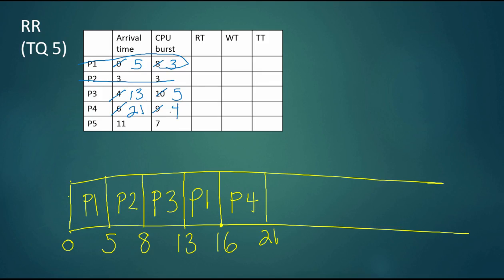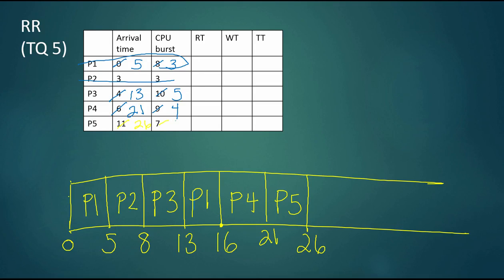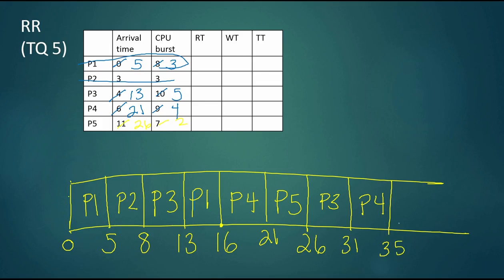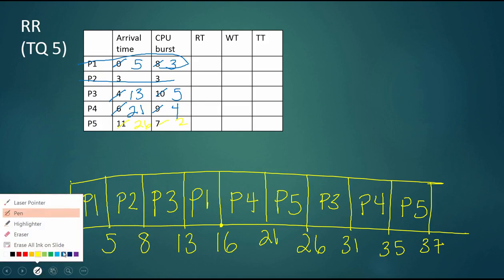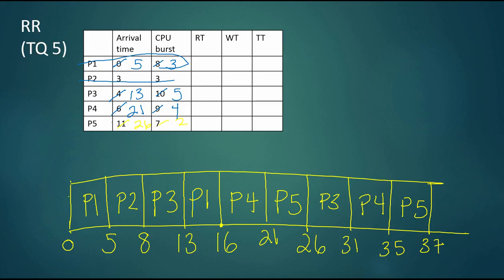The current time is 21, so the next one to arrive in the ready queue was P5. P5 will get five time units until time 26, with a new arrival time of 26. Now the current time is 26 and we have P3, P4, and P5. P3 has five time units left, P4 has four time units left, and P5 has two time units left, so the total time to complete all processes was 37 time units.